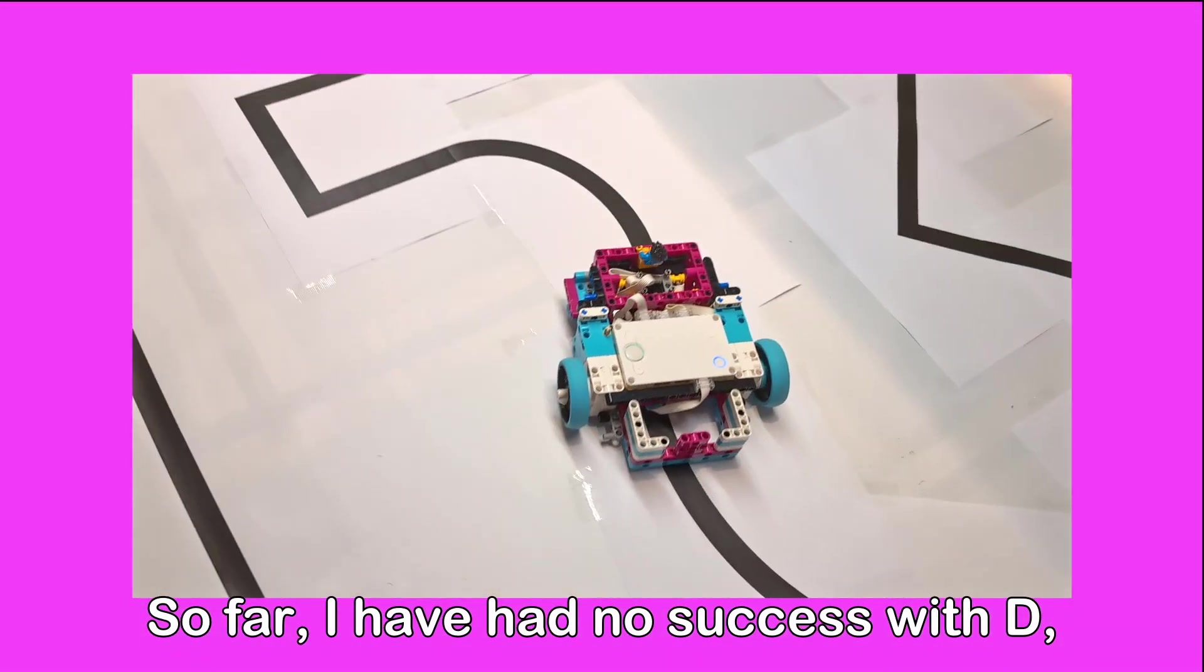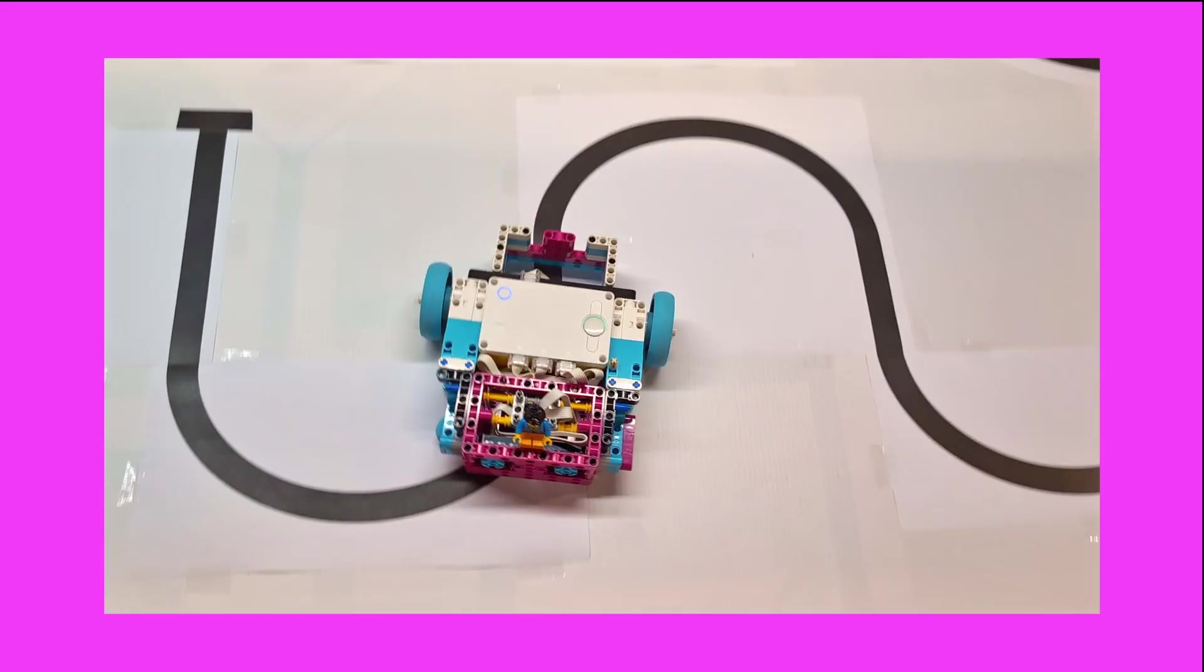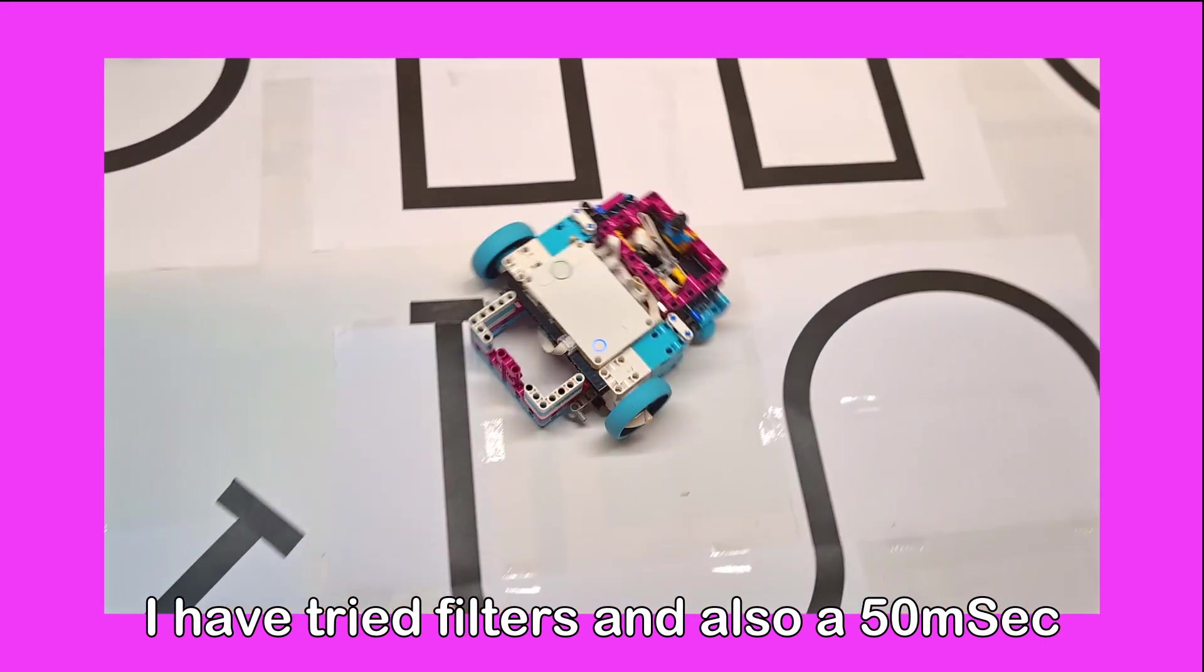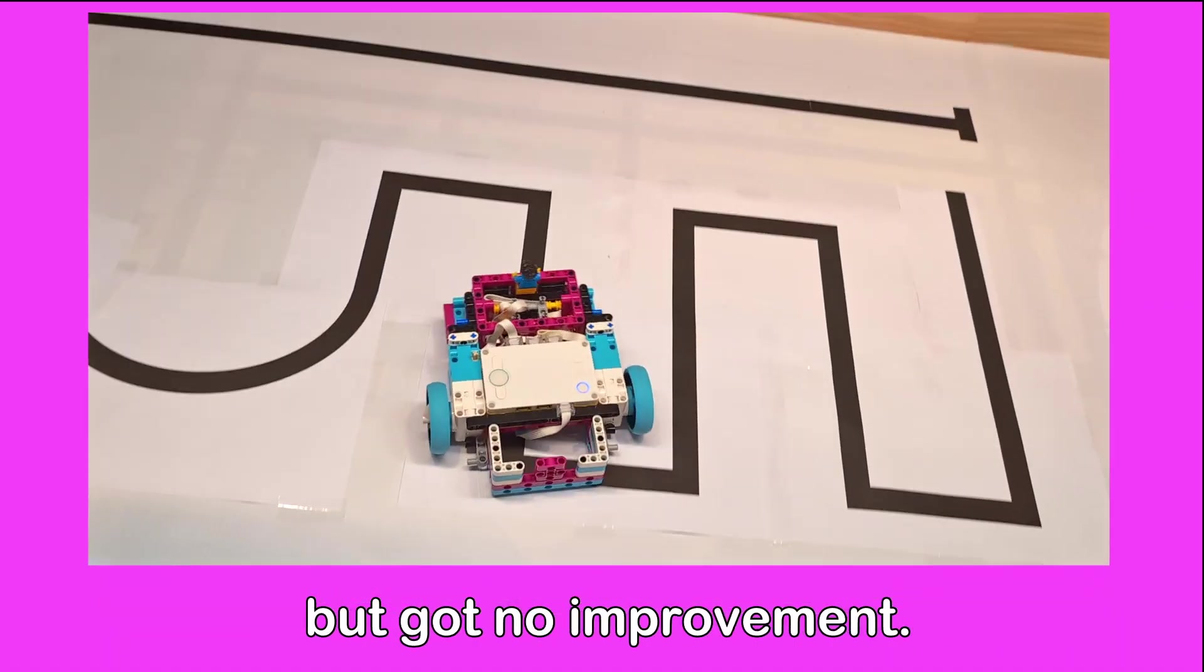So far, I have had no success with D. I think because the light sensor signals are noisy and unstable. I have tried filters and also a 50 millisecond wait in the PID calculation, but got no improvement.